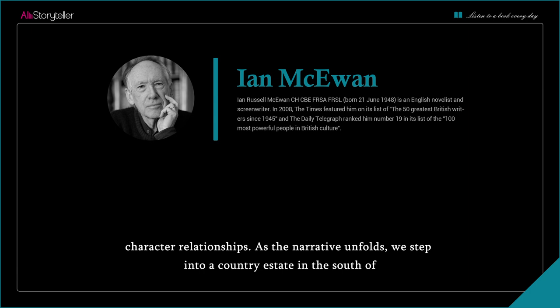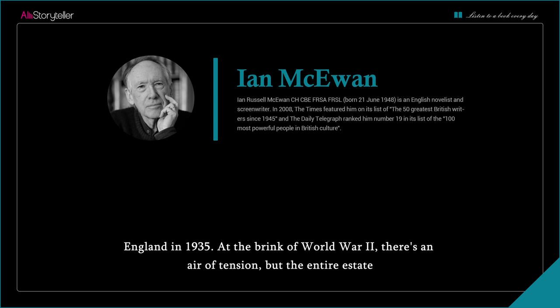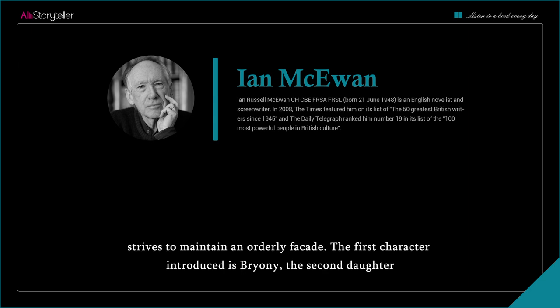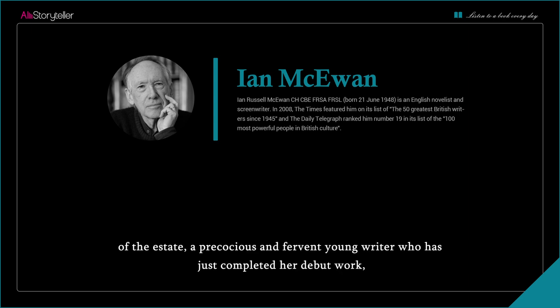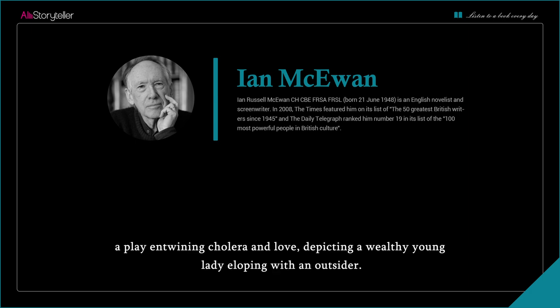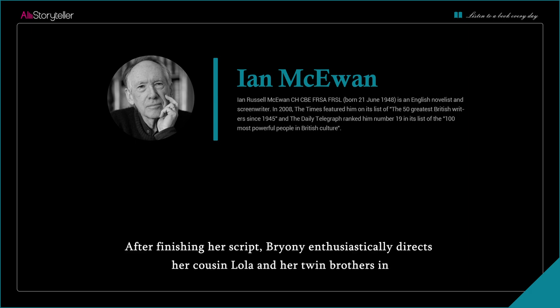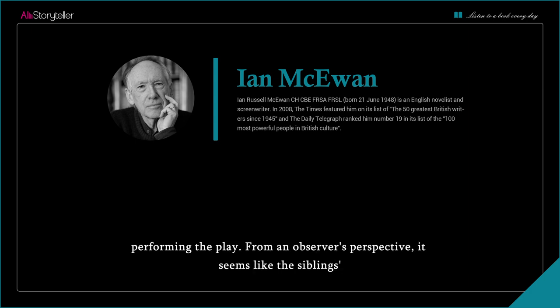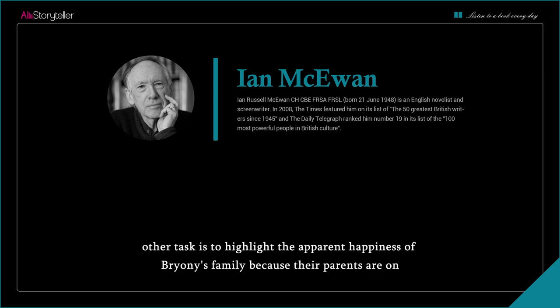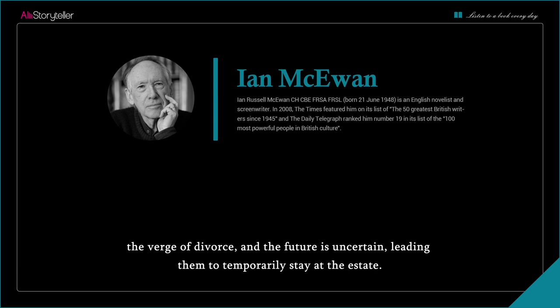As the narrative unfolds, we step into a country estate in the south of England in 1935. At the brink of World War II, there's an air of tension, but the entire estate strives to maintain an orderly facade. The first character introduced is Bryony, the second daughter of the estate, a precocious and fervent young writer who has just completed her debut work — a play entwining cholera and love, depicting a wealthy young lady eloping with an outsider. After finishing her script, Bryony enthusiastically directs her cousin Lola and her twin brothers in performing the play. It seems the siblings' other task is to highlight the apparent happiness of Bryony's family, because their parents are on the verge of divorce, and the future is uncertain, leading them to temporarily stay at the estate.